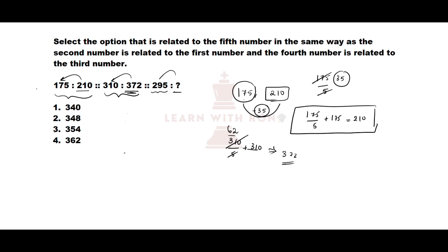Now let us find our answer. 295 divided by 5, plus 295. 295 divided by 5 is 59, so 295 plus 59 equals 354. The unit digit is 4, which is option number 3.